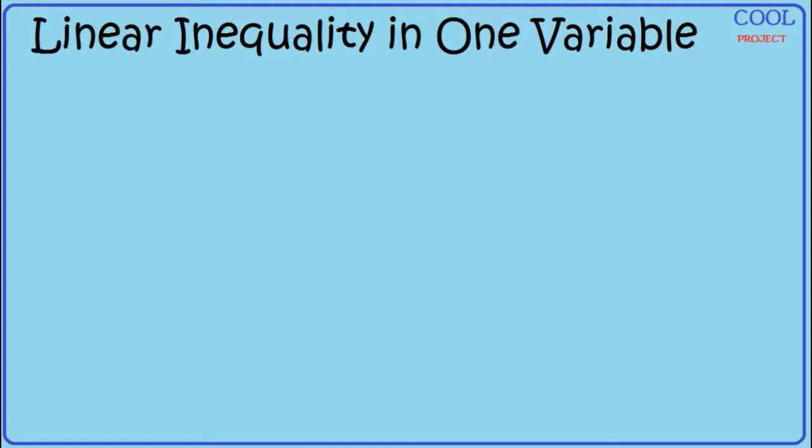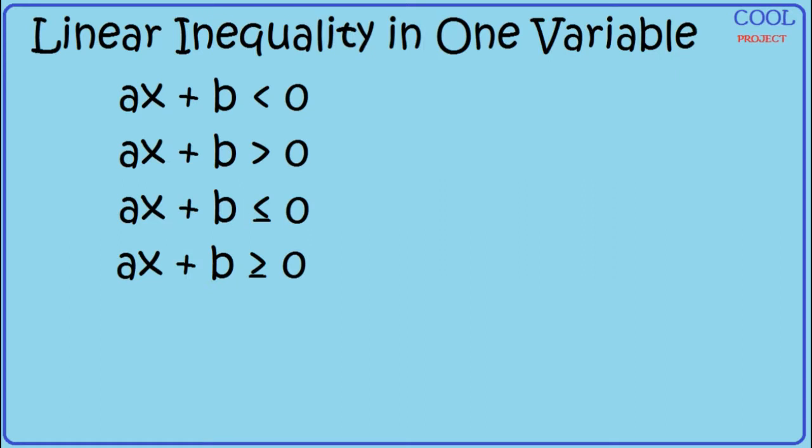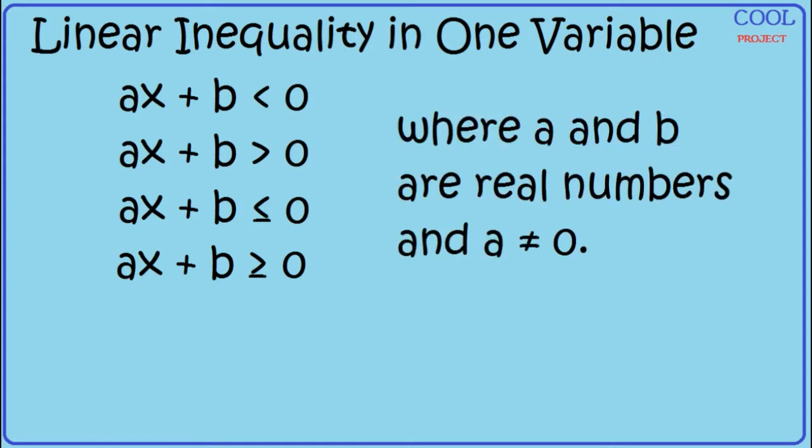A linear inequality in one variable is a mathematical statement equivalent to one of the forms: ax plus b is less than 0, ax plus b is greater than 0, ax plus b is less than or equal to 0, or ax plus b is greater than or equal to 0, where a and b are real numbers and a is not equal to 0.